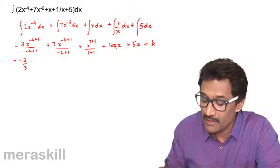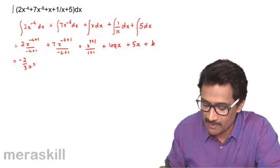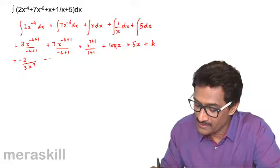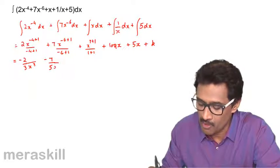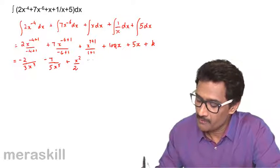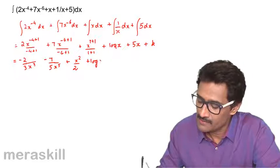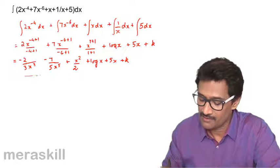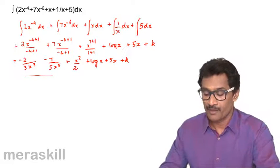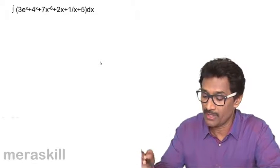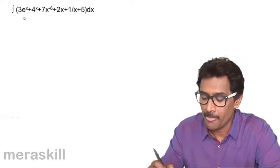This simplifies to minus 2 by 3 x raised to minus 3, which becomes minus 2 by 3x cubed. The next term becomes minus 7 upon 5, with 1 upon x raised to 5. Then we have x squared by 2, plus log x, plus 5x, plus constant k. These are simple questions that can be done very easily.